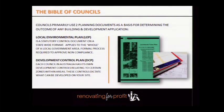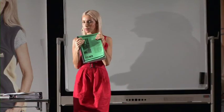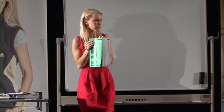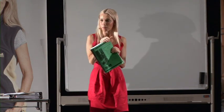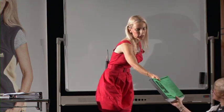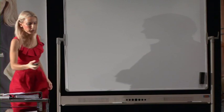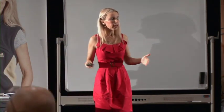The bible of councils is the LEP/DCP document. This document has all the ins and outs — side setbacks, height setbacks, building line zones, color schemes, heritage overlays, all sorts of things. It's worthwhile for you as professional renovators to get a copy. You can download it free from every council's website — but when you print it out it's two to three hundred pages. You can also buy a printed copy from council. In your own suburbs it means you can start to know what council does and doesn't like.